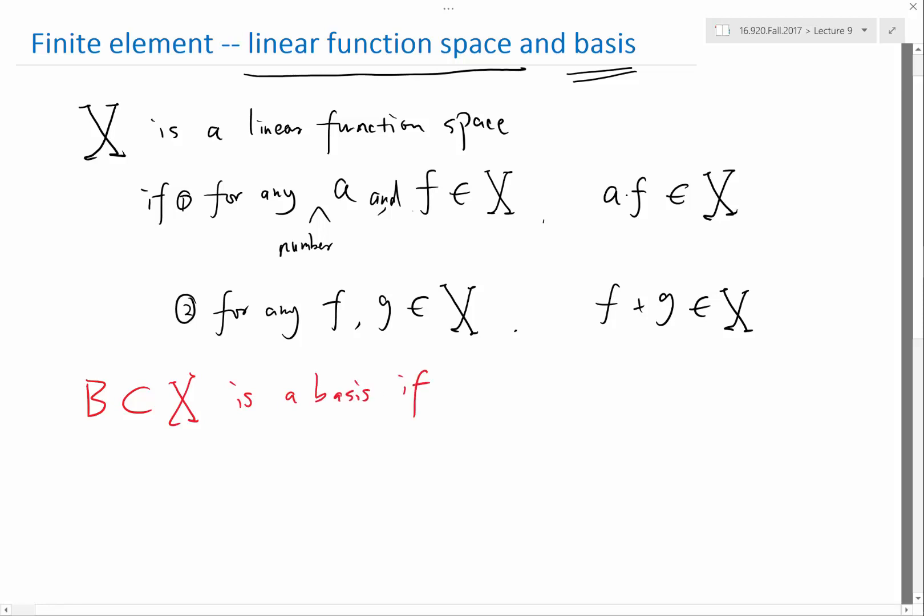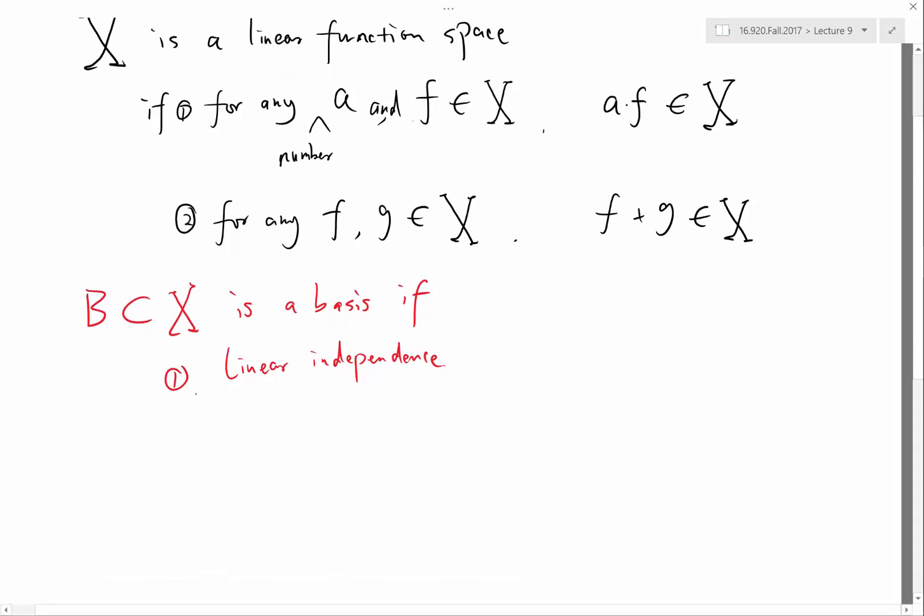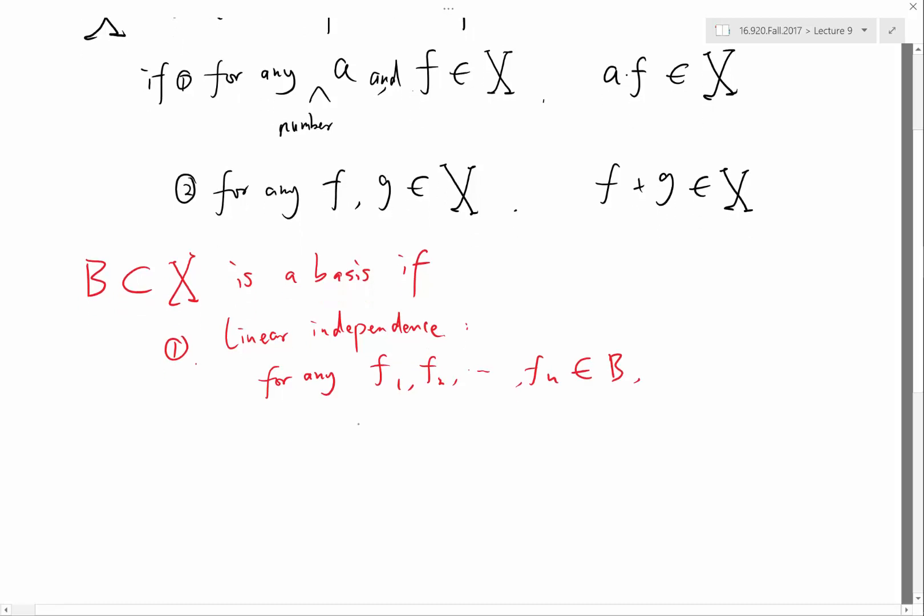If we also get two conditions. So the first condition is linear independence. So what does linear independence mean? It means that if I choose any finite number of elements in this basis, so that means, so for any F1, F2, et cetera, Fn, all of them are inside this basis.